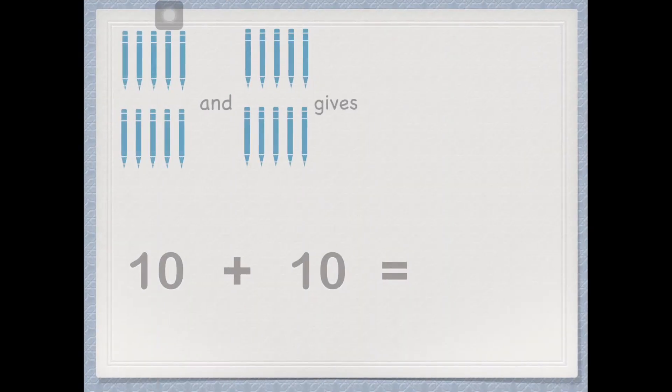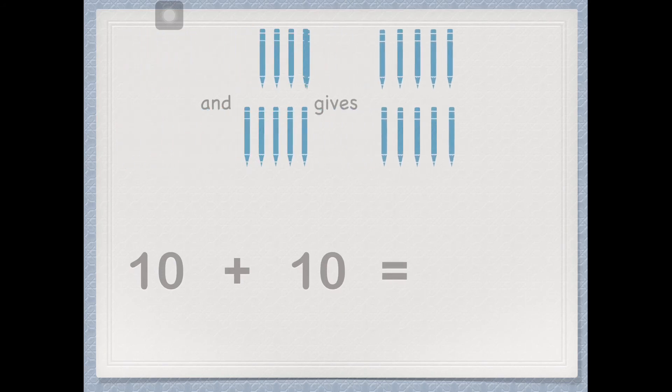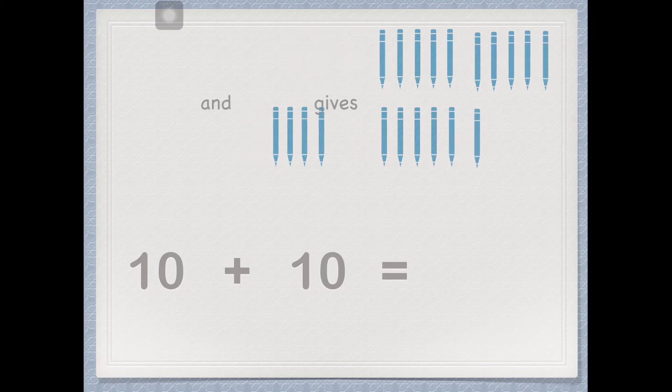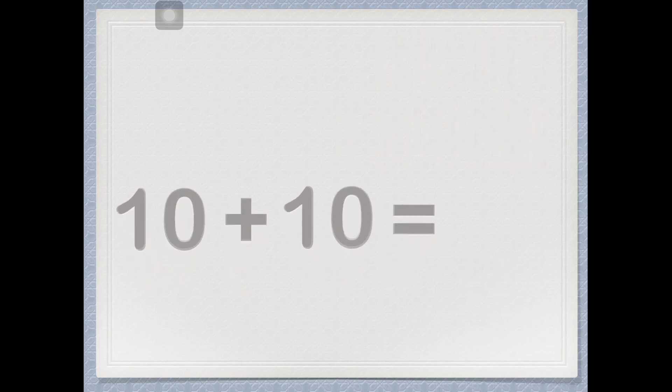10 plus 10 gives 10, 11, 12, 13, 14, 15, 16, 17, 18, 19 and 20. 10 and 10 gives 20.